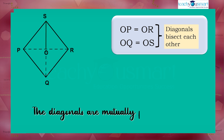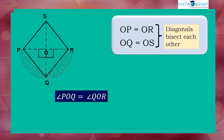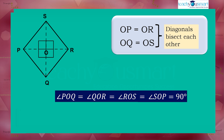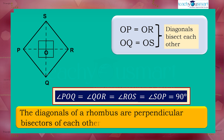Moreover, it's a kite too, so the diagonals are mutually perpendicular. That is, angle POQ equals angle QOR equals angle ROS equals angle SOP equals 90 degrees. So we can say that the diagonals of a rhombus are perpendicular bisectors of each other.